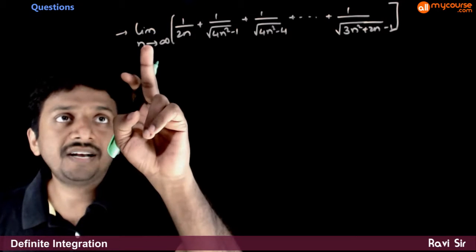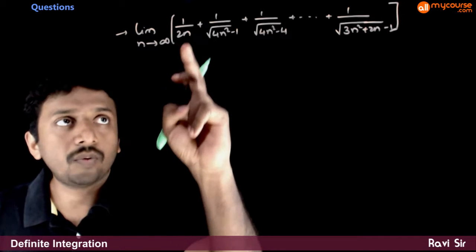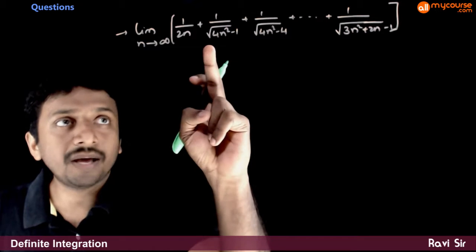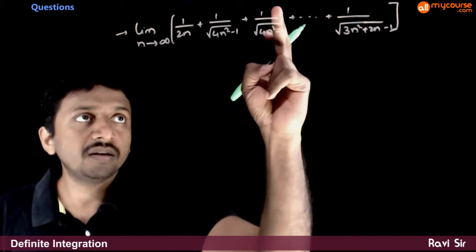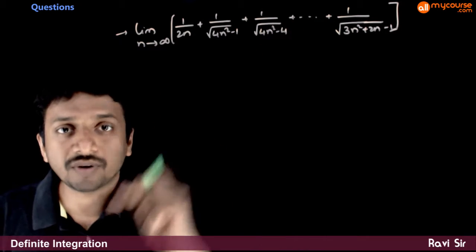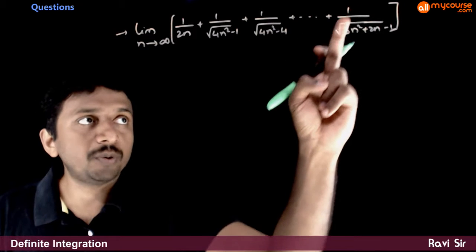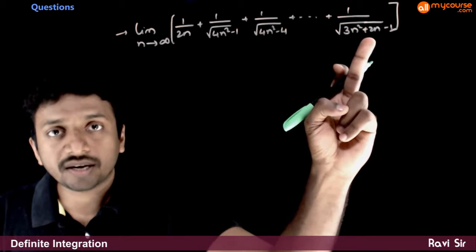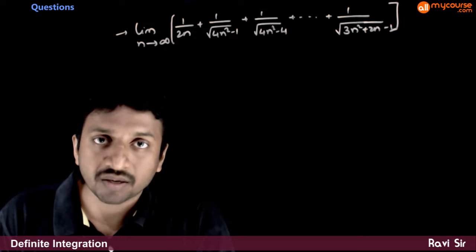In this question, you are asked to find limit n tends to infinity 1 by 2n plus 1 by root of 4n square minus 1 plus 1 by root of 4n square minus 4 plus so on up to 1 by root of 3n square plus 2n minus 1.